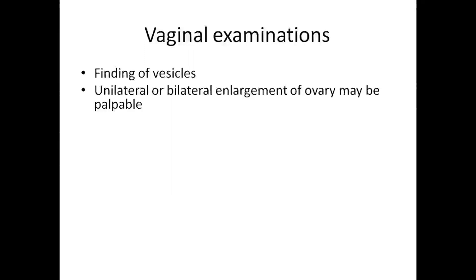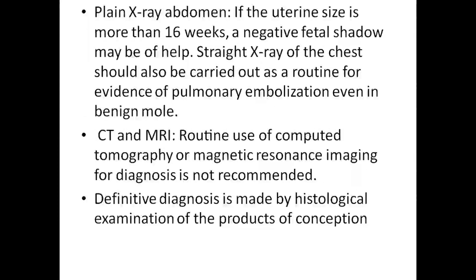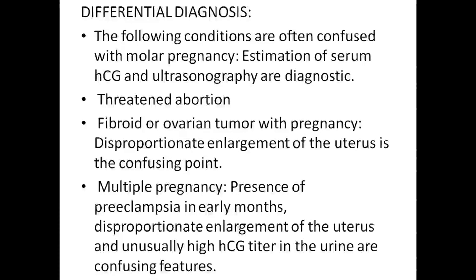Vaginal examination shows finding of vesicles; unilateral or bilateral enlargement of ovary may be palpable. Investigations include full blood count, ABO-RH grouping, hepatic and renal thyroid function tests, sonography showing the characteristic snowstorm appearance of molar pregnancy, and quantitative estimation of chorionic gonadotropin with high HCG titer in the urine. Plain X-ray abdomen: if the uterine size is more than 16 weeks, a negative fetal shadow may be helpful. Straight X-ray of the chest should also be carried out for evidence of pulmonary embolization. CT and MRI: routine use is not recommended. Definitive diagnosis is made by histological examination of the products of conception. Differential diagnosis includes threatened abortion, fibroid or ovarian tumor, and multiple pregnancy.